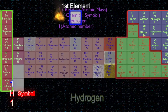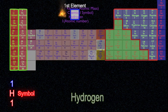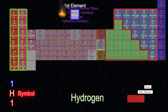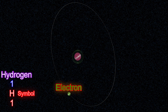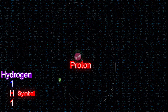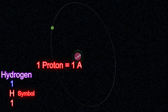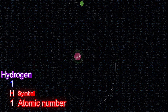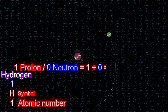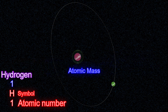Hydrogen is the very first element in the periodic table. Hydrogen atom has one electron, one proton, and no neutron. One proton means one atomic number. One proton and no neutron mean one atomic mass.